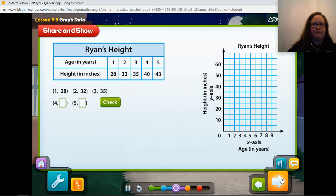Ryan's height, according to his age, is displayed in the chart. Some ordered pairs have been written for you underneath. What are the remaining ordered pairs? Type your answer, and then click check. Okay, so if our first ordered pair is 1, 28, our second one 2, 32, our third 3, 35, then we have 4, 40, and we have 5, 43. That's right! 4, 40, and 5, 43 are the remaining pairs.